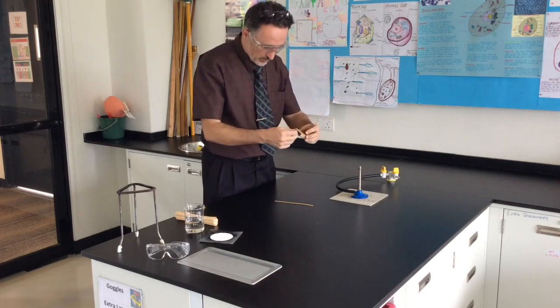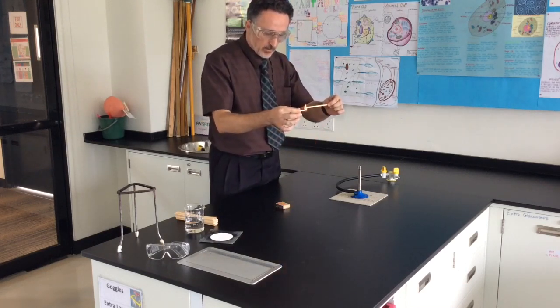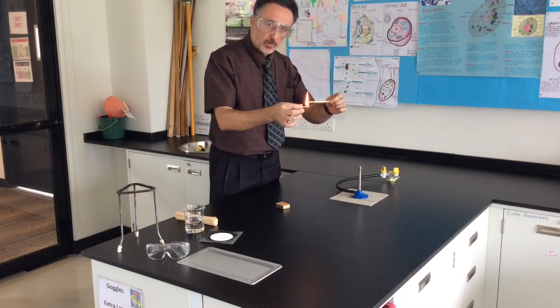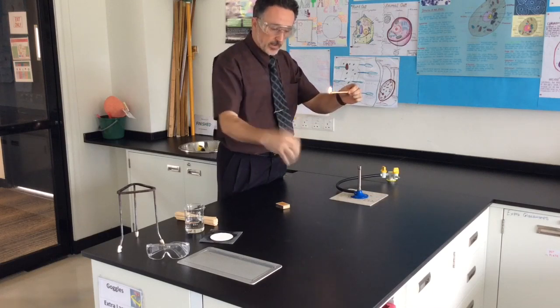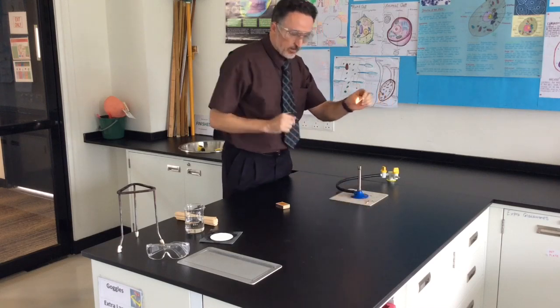Get the match ready. Light it, and then light your wood splint. The matches are too short to use to light the Bunsen, so we use the wood splint, because these can burn down and then burn your fingers. If that's hot, leave it on the heatproof mat.